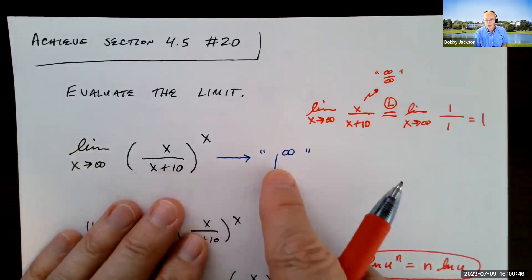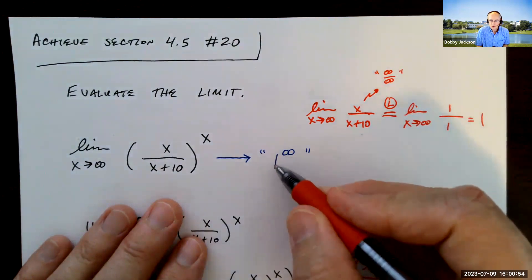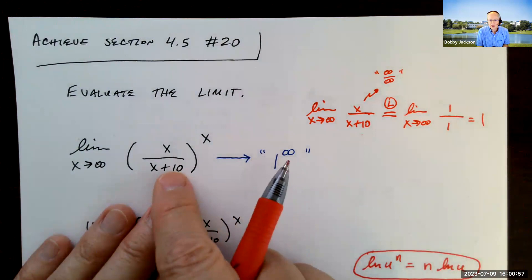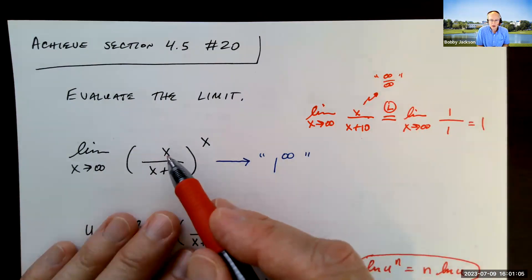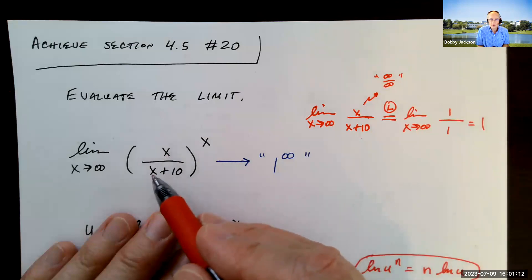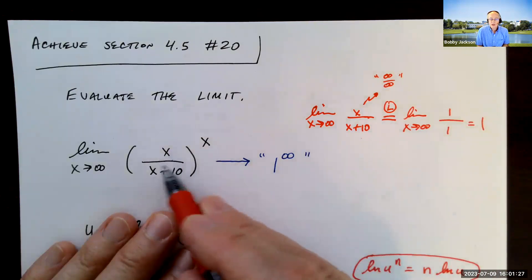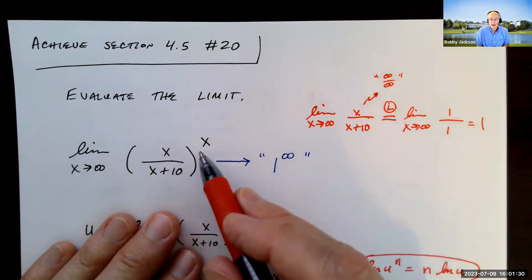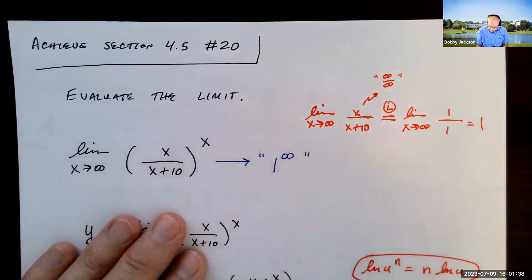So the base is going to 1 and the exponent is going to infinity, giving us an indeterminate form of 1^∞. The base approaching 1 wants to push the limit to 1, since 1 to any power is 1. However, for any value of x the base is always a little less than 1 — for example, x=100 gives 100/110, and the exponent getting bigger and bigger drives a number less than 1 toward 0. So the limit could be 1, could be 0, or something in between.